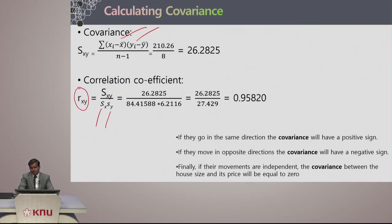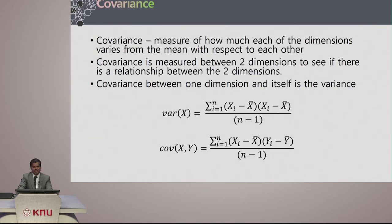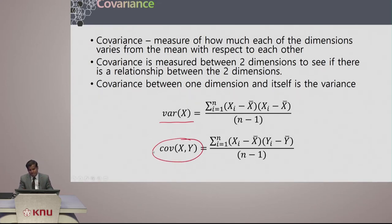The covariance can be of different types: it can have a positive sign, a negative sign, or sometimes no significant difference between the two variables. When we talk about variance, we always talk about only one variable, whereas covariance is between two variables x and y. In fact, covariance between one dimension with itself is just the variance, whereas covariance is between two dimensions.